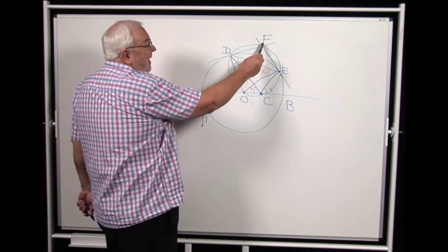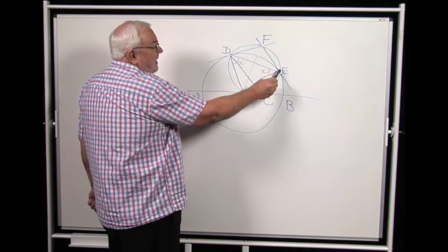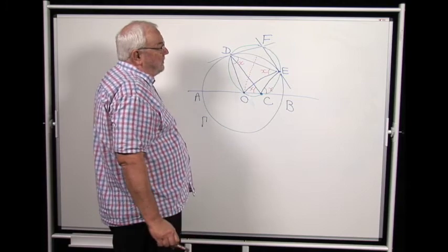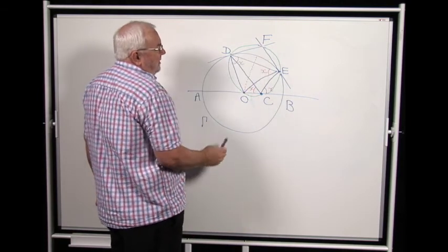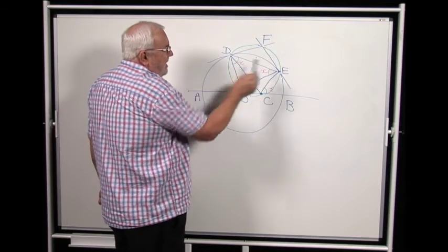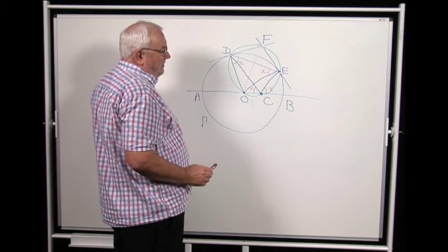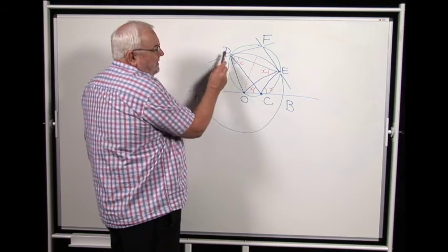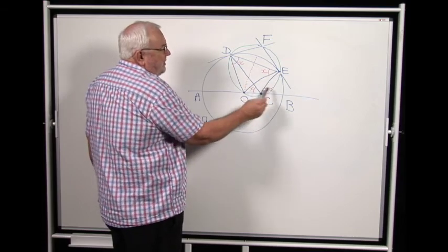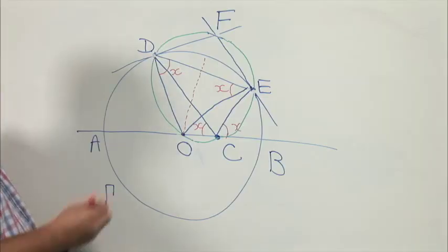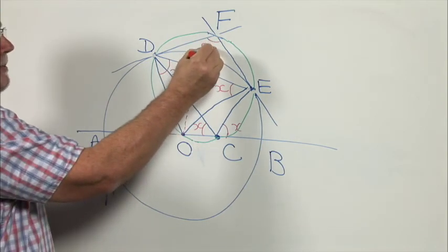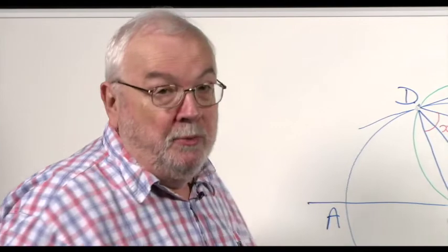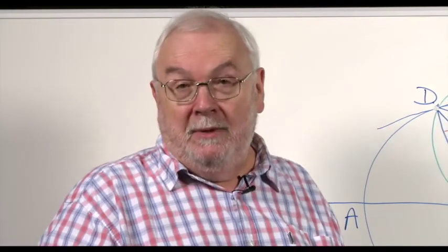Because now we know that FDCE is a cyclic quadrilateral. Its opposite angles EFD and DCE add to 180. But so does DCE plus 2X. And that forces this angle EFD to be 2X, which is exactly what you wanted. And so we've proved it.